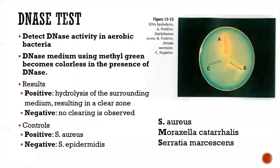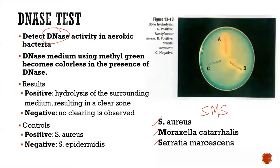Another test for Staph is the DNase test, which detects DNase production. There are only three organisms to remember that produce DNase: Staph aureus, Moraxella catarrhalis, and Serratia marcescens — the mnemonic is SMS. The medium used contains DNA and methyl green; the methyl green-DNA complex is green in color.